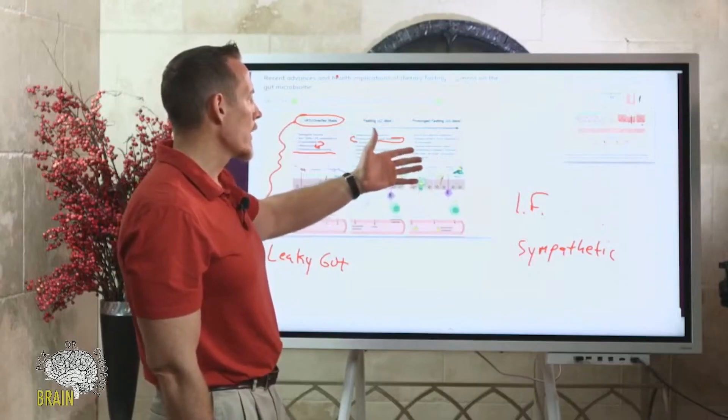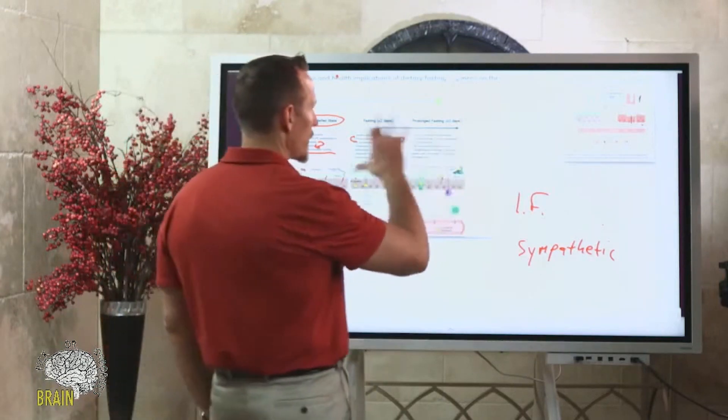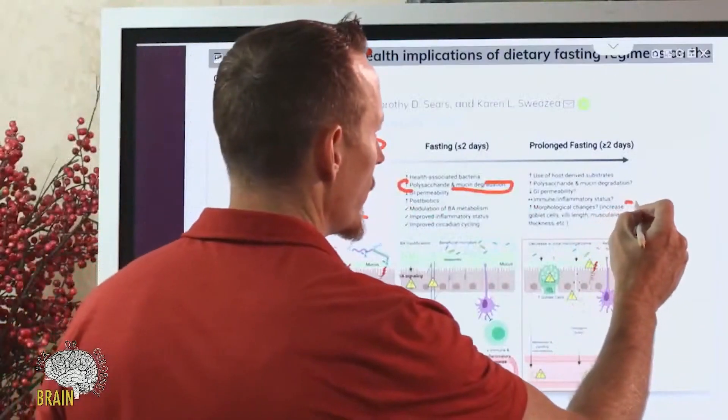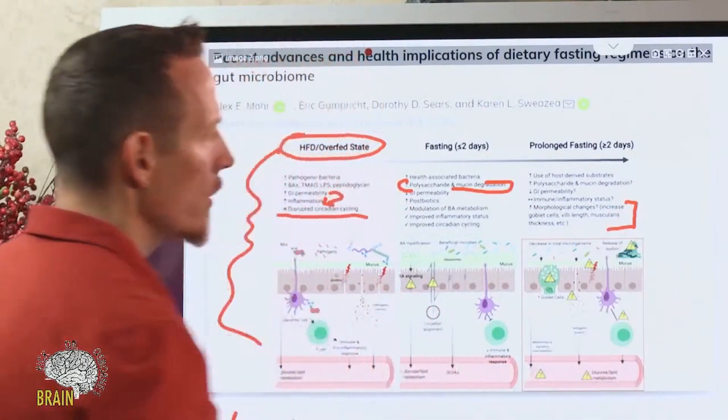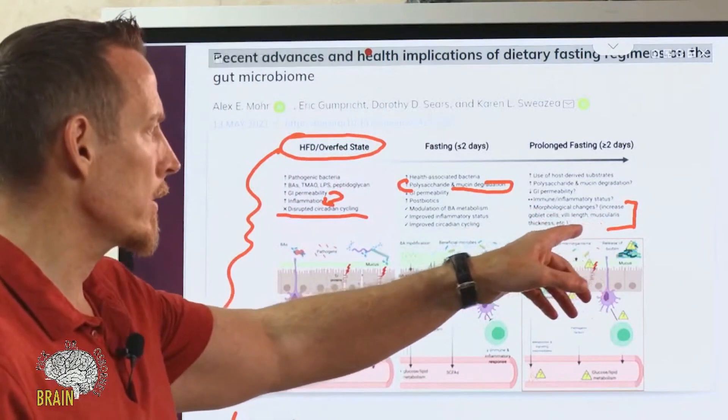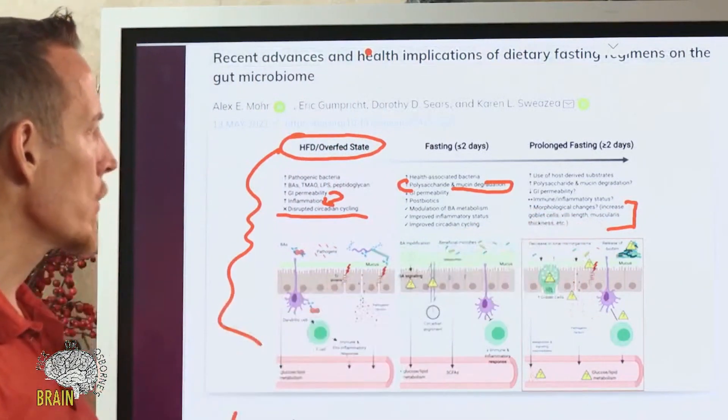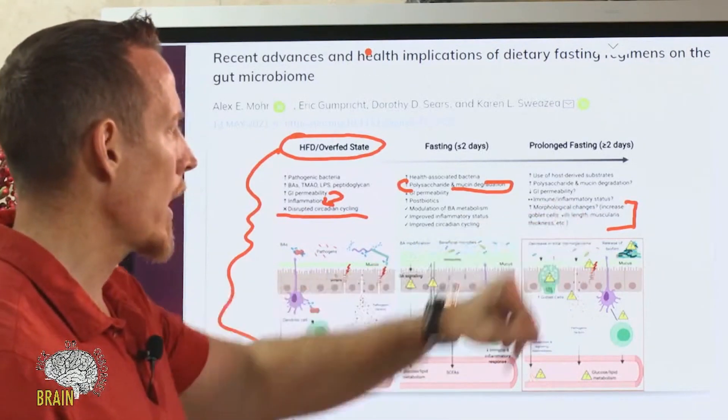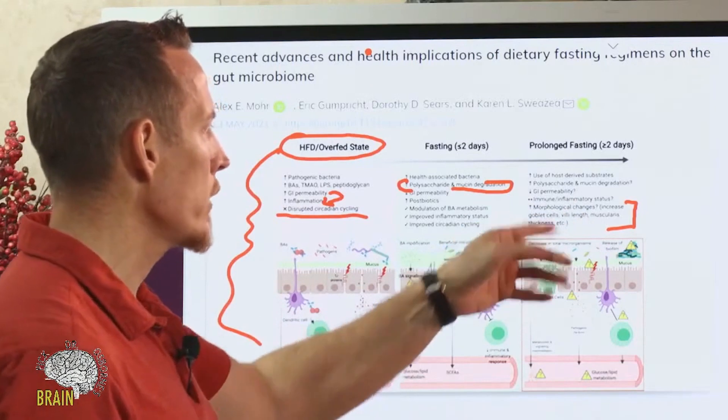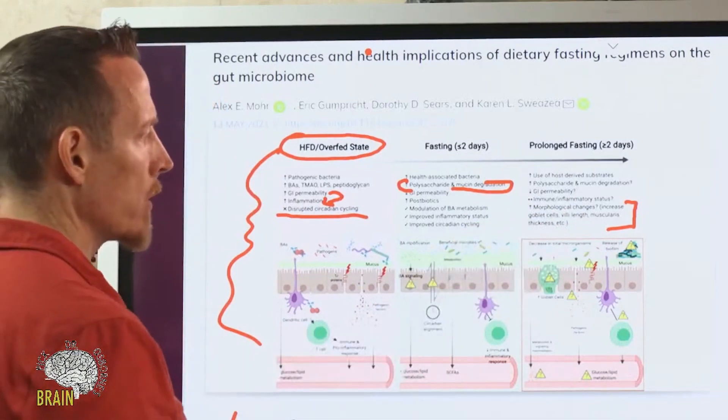If you take it beyond two days, then what happens next is we get improvement in morphological changes. This is in your gut—these are fasting changes that occur in your gut. If we're trying to improve your gut function, we get increased morphological changes, increasing goblet cells and villi length. If you've been diagnosed with celiac disease and you're trying to improve your villi, then fasting might be a really great strategy to implement.